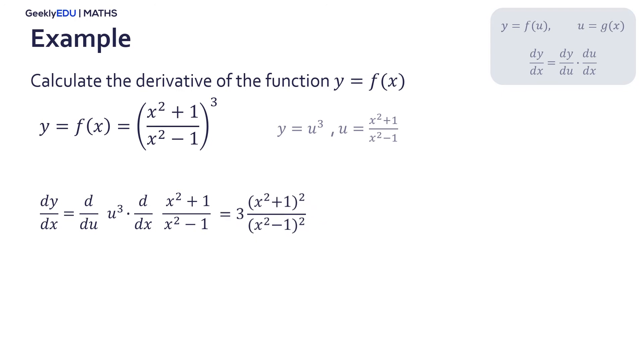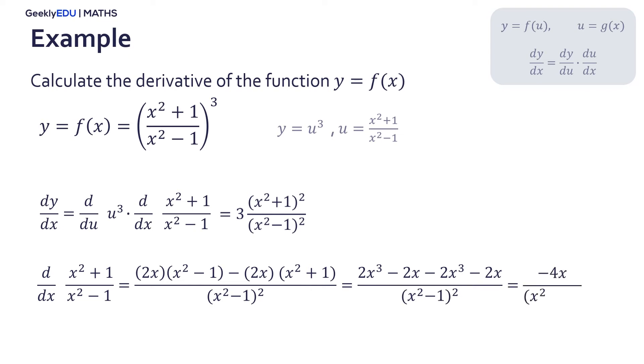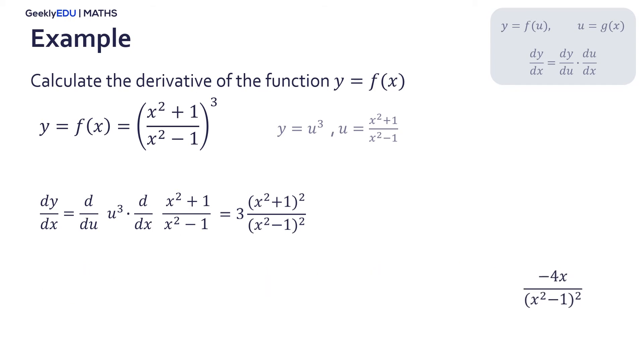And now we have to calculate the second derivative using the quotient rule and simplifying. Now we have to multiply these two terms and simplify this product.